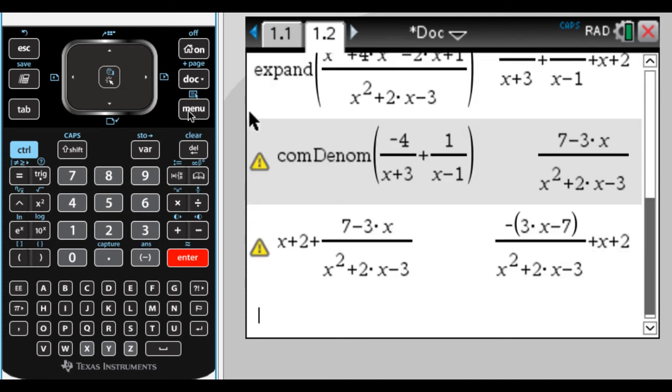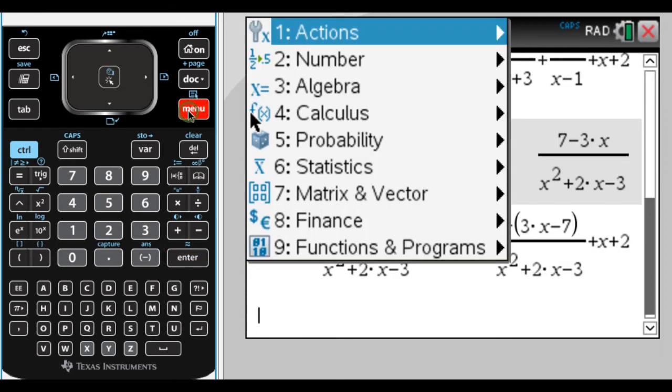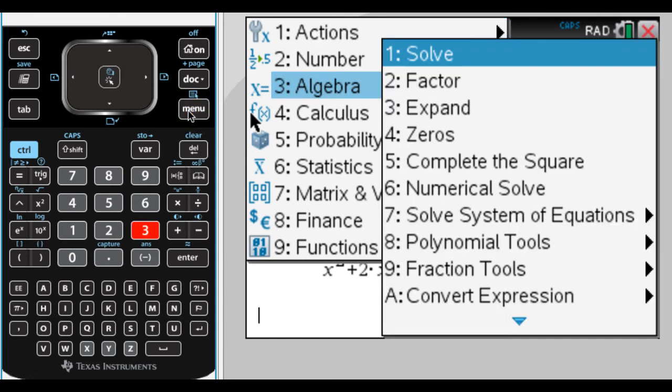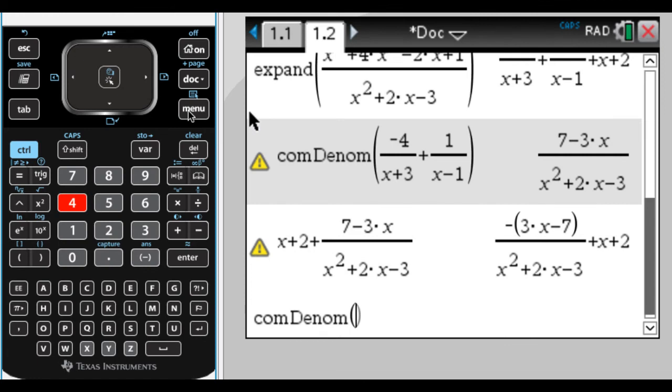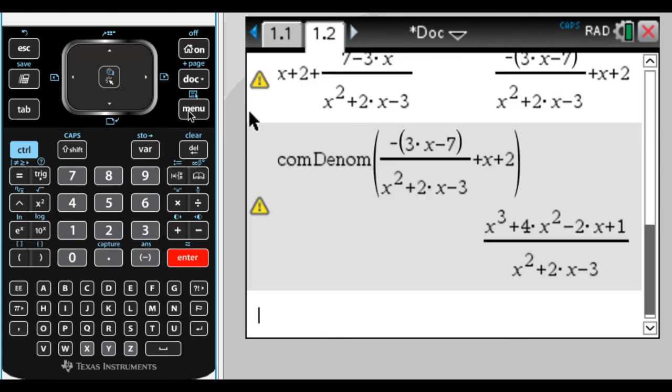And if I wanted to, I could just check my answer by typing in and actually getting a common denominator. So I could do menu three, option nine, and then option four, and then take this, and it goes back to the original. So that's another way you can check your answer. But I'm more interested in just getting the answer straight away by using the calculator.